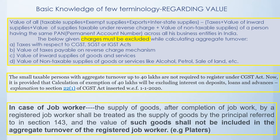In the case of a job worker — for example, the plating industry — someone else provides the material and on that material the plating is done. The question arises whether the value of the material should also be included or not. It has been clearly provided that the material value will be included in the principal's case. But the job worker who is doing the plating — whatever charges he is charging only for plating — only that has to be considered when determining the liability of the job worker, and not the value of the goods which his customer is providing.